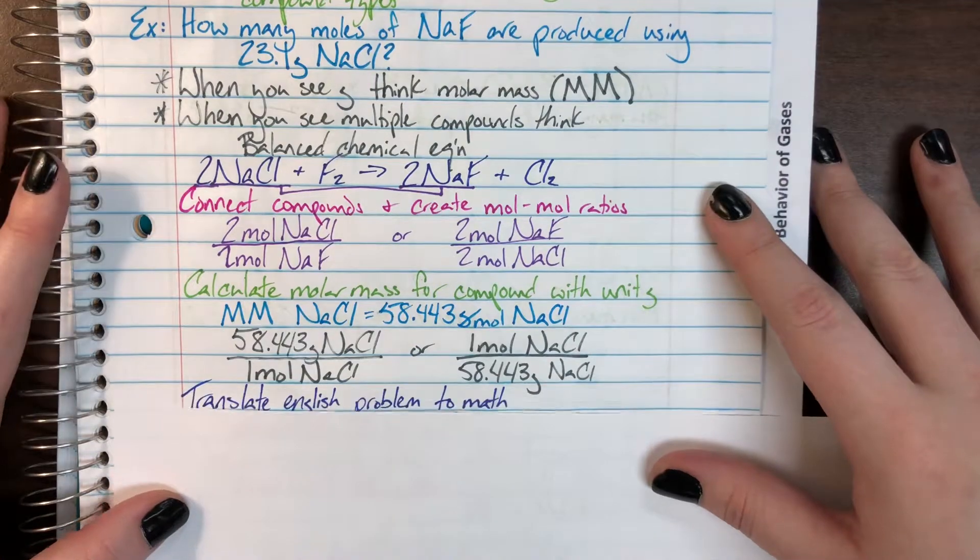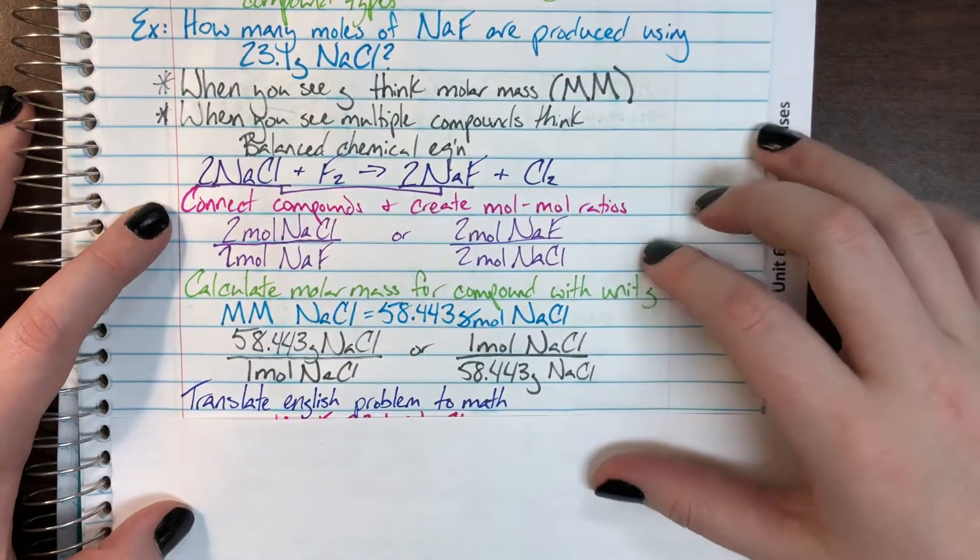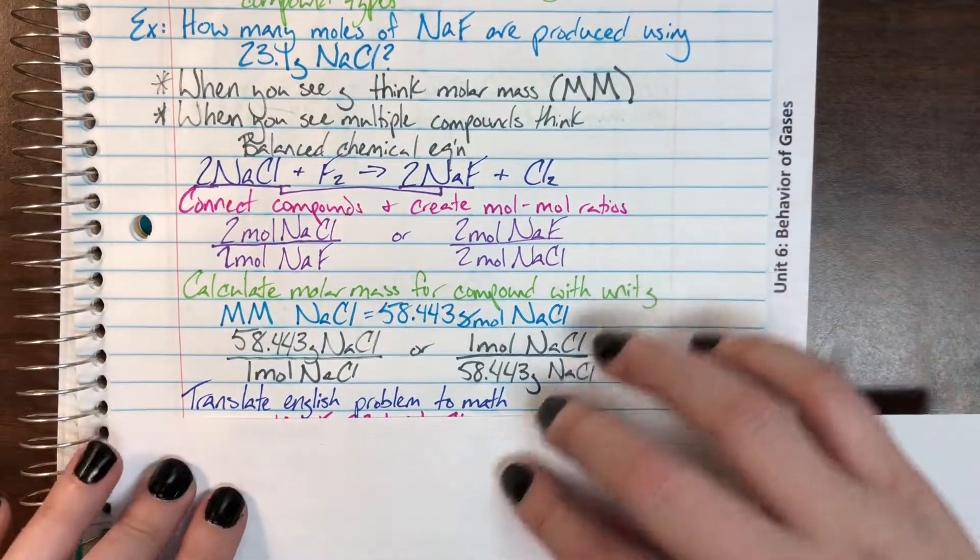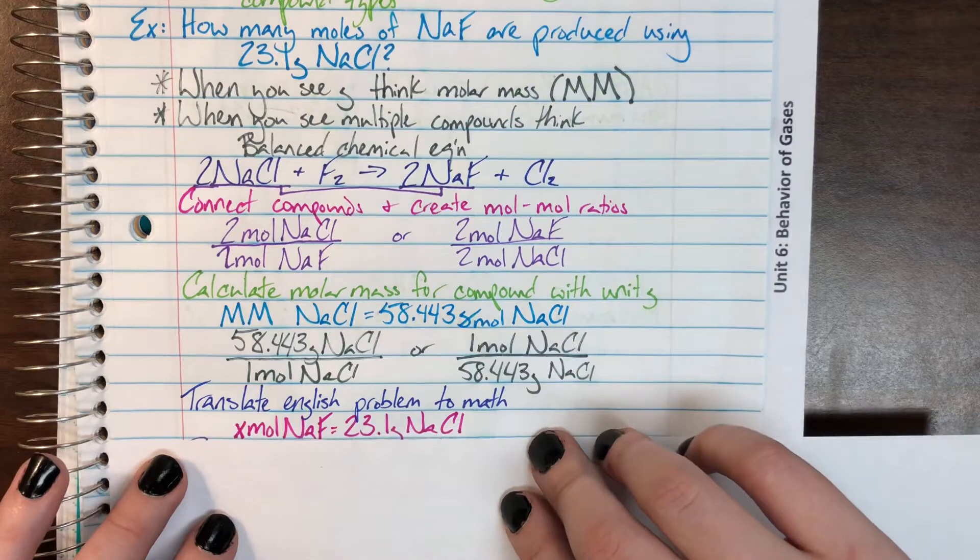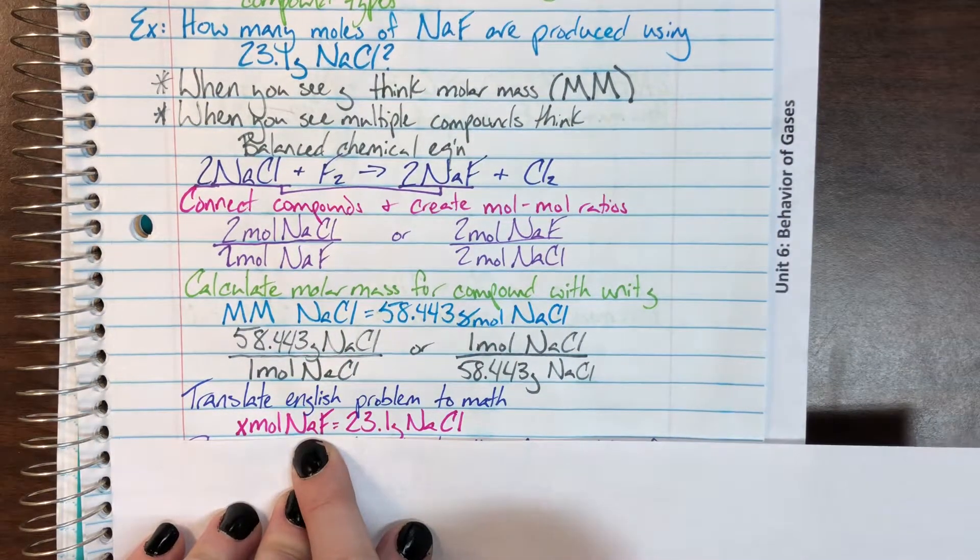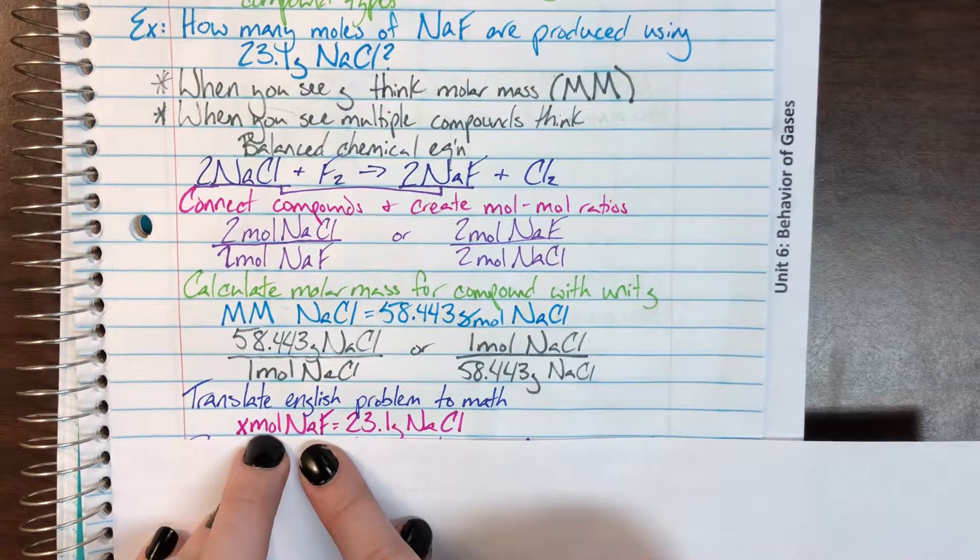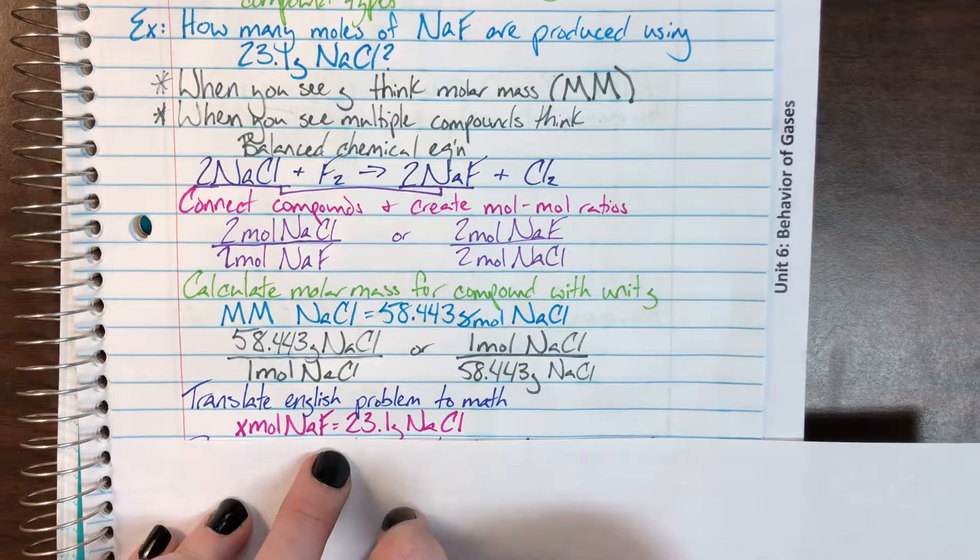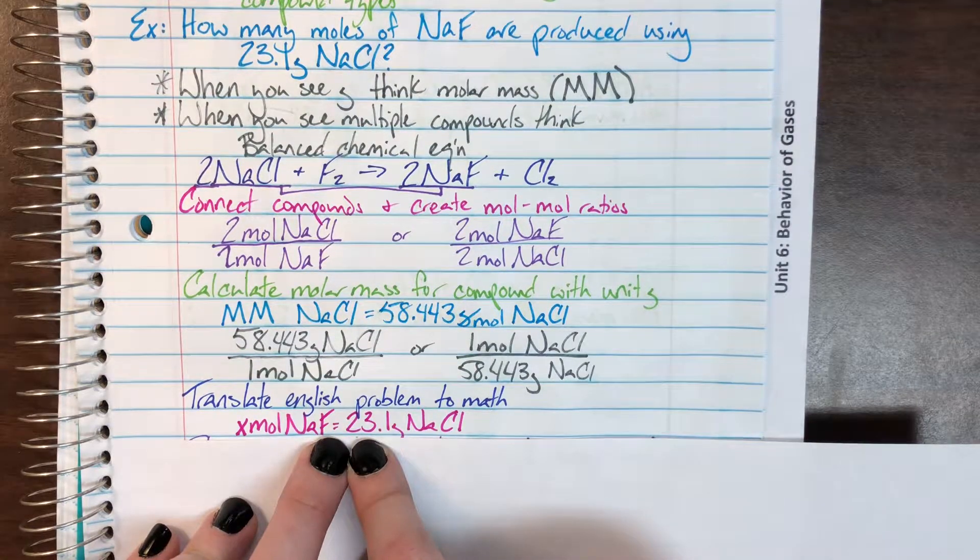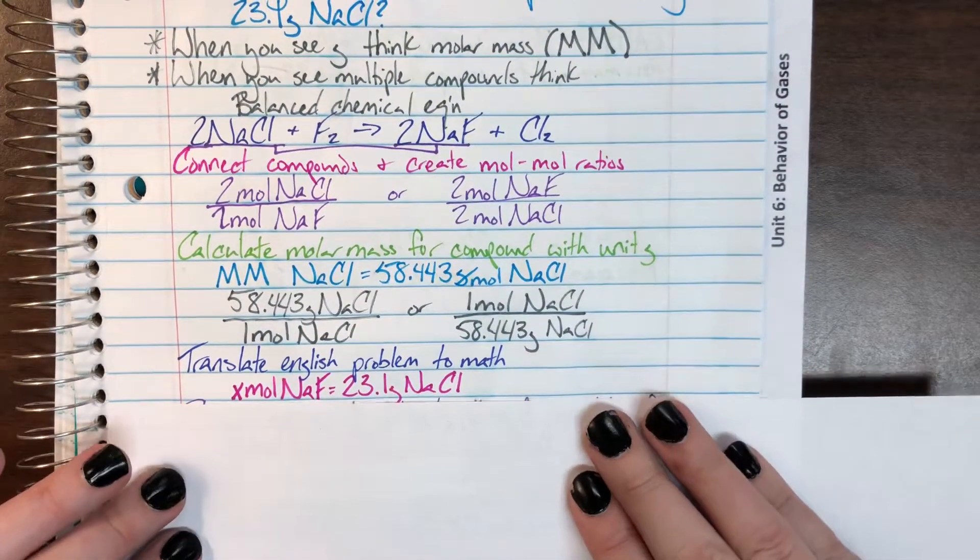Our very last step is to translate our English problem into a math problem. Remember that our question word gets turned into X and our unit connected to the question gets turned into this. So, how many moles of NaF turns into X moles NaF are produced using turns into equals and 23.1 grams of sodium chloride gets to stay the same as 23.1 grams of sodium chloride.